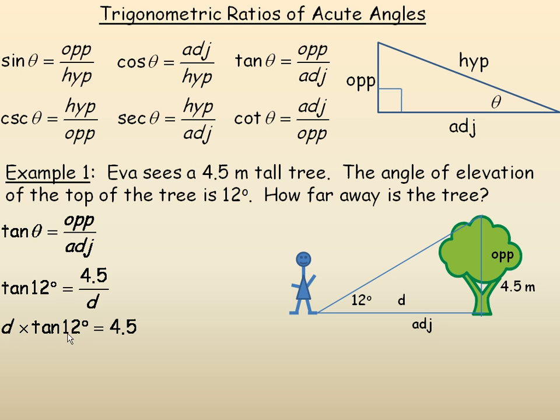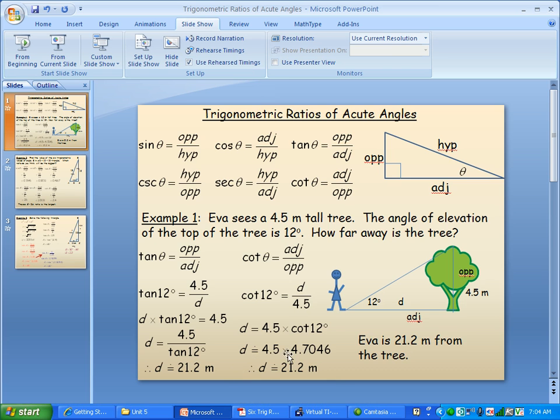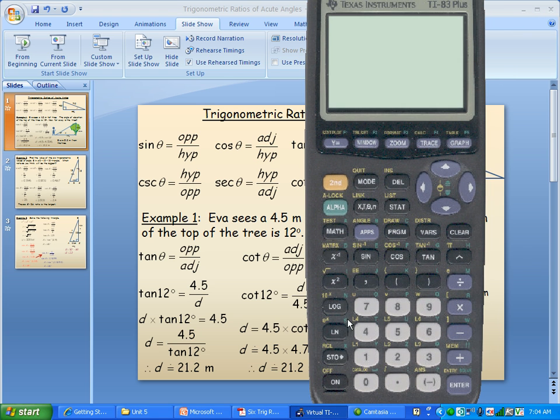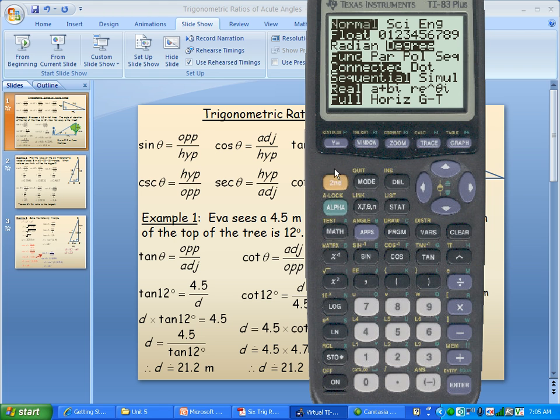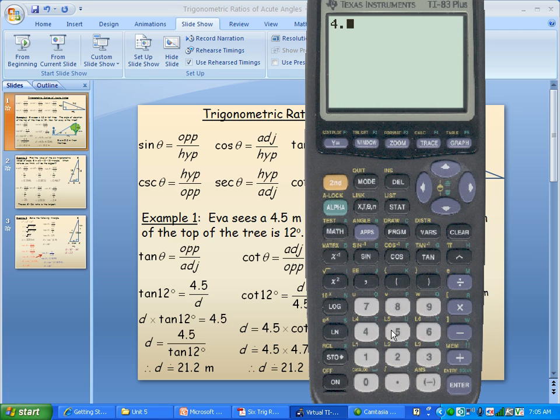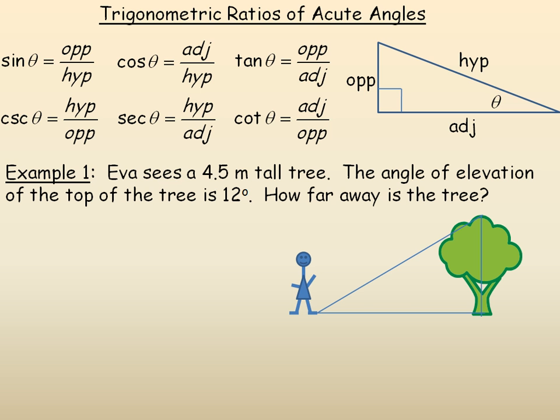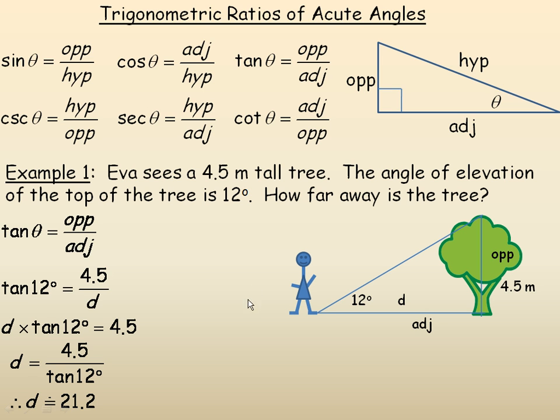I want to solve for d. The d is multiplied by this tan, so I would divide both sides by the tan of 12 degrees. The d works out to be 4.5 divided by the tan of 12 degrees. You have to make sure your calculator is in degree mode. So that's where my 21.2 to 1 decimal place comes from. D is 21.2 meters.